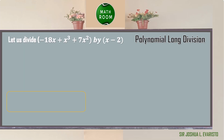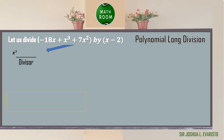Let's have another example. Let us divide negative 18x plus x cubed plus 7x squared by x minus 2. We need to first identify the dividend and divisor and write them in standard form. The dividend, rearranged in standard form using the highest exponent first, is x cubed plus 7x squared minus 18x, and the divisor is x minus 2. We write the dividend inside and the divisor outside.